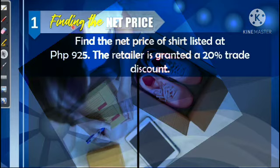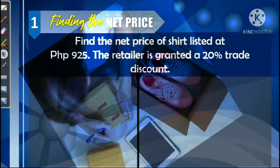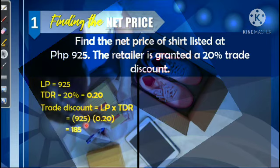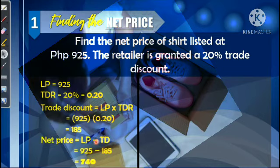Let us now apply the formulas in our example. Finding the net price: find the net price of a t-shirt listed at 925 pesos, where the retailer is granted a 20% trade discount. Using the discount method, identify the given values: list price = 925 pesos, trade discount rate = 20% or 0.20. Step 1: trade discount = 925 × 0.20 = 185 pesos. Step 2: net price = 925 − 185 = 740 pesos.